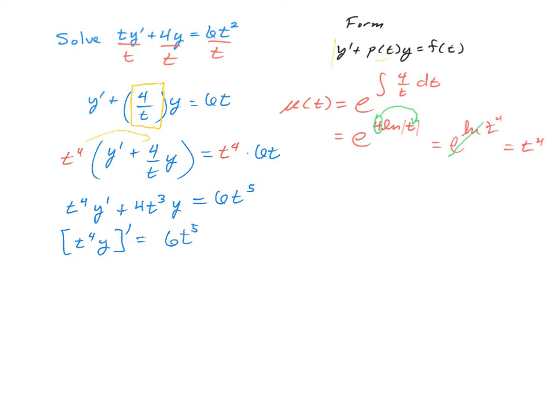We now need to integrate both sides with respect to the independent variable. This time around, it's t. So we integrate both sides with respect to t. And in doing so, we're going to have a t to the 4th times y. The integral of 6t to the 5th is just t to the 6th plus the arbitrary constant c.